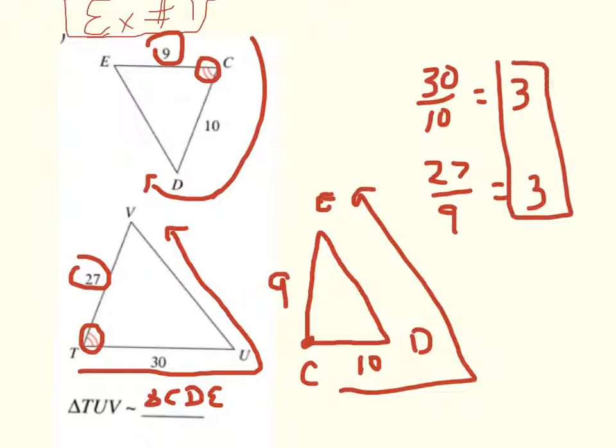So if these are the same numbers, and it doesn't matter if you do 10 divided by 30 and then do 9 divided by 27, it would still be 0.33. As long as these numbers are the same, you have similar triangles. So that's your test.